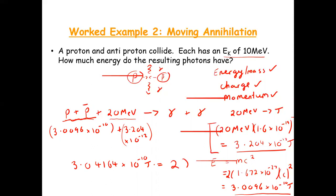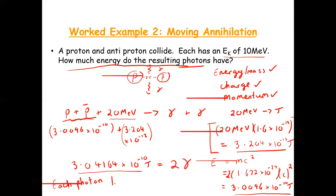That total energy is what the two photons have. So the answer to how much energy the resulting photons have is 3.04164 times 10 to the minus 10 joules. If you want the energy of each photon, divide by two: each photon has 1.52 times 10 to the minus 10 joules. The procedure is always the same — use E equals mc squared, and add kinetic energy if given, converting from electron volts to joules as needed.